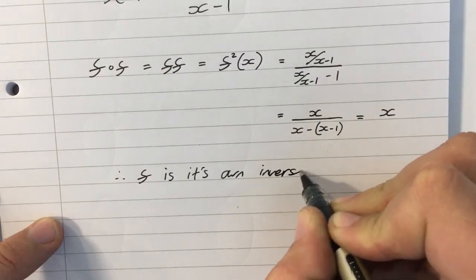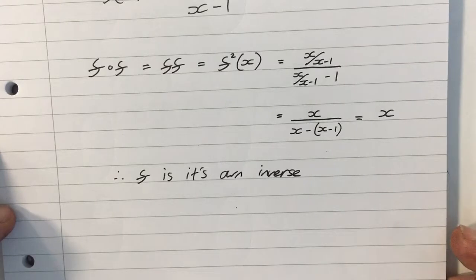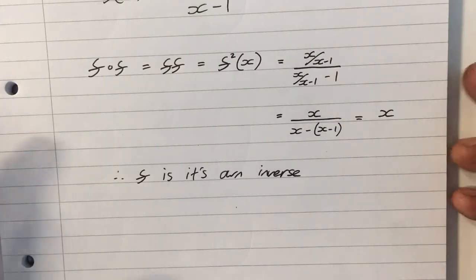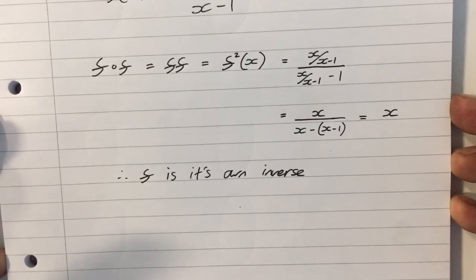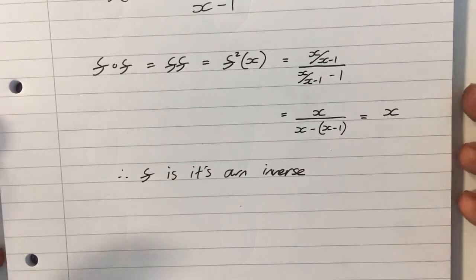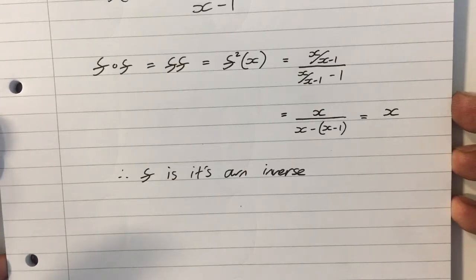And there are a number of functions which are their own inverse. It's completely possible. And when we do some coordinate geometry examples, we'll start plotting them on graphs and see what the inverse actually does on the graph, and then we'll be able to pin down the type of function that will be its own inverse.